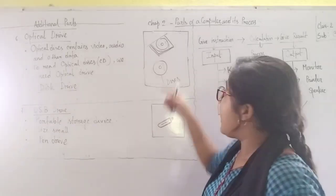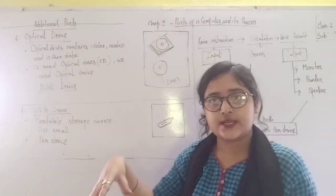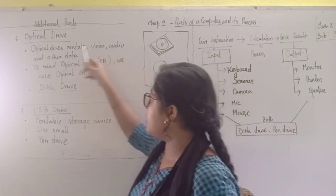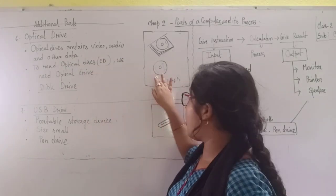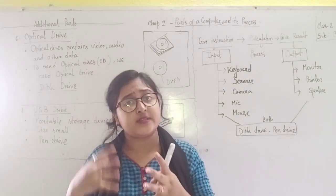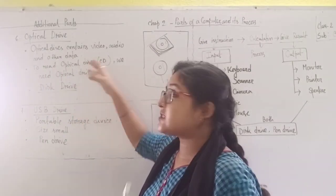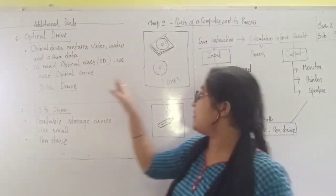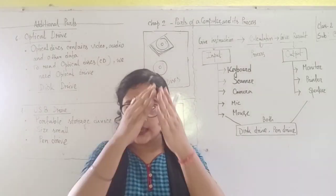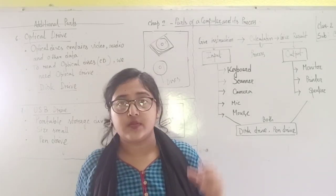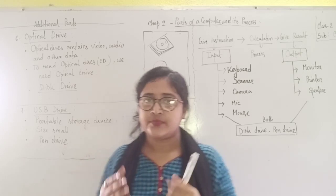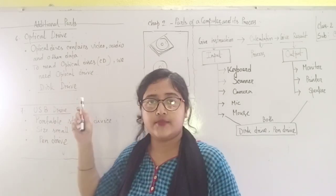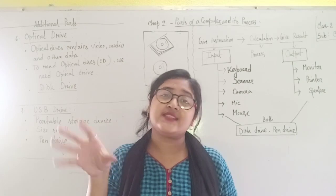This CD is what we call this, and this machine where we put the CD is the optical drive. Optical disk contains video, audio, and other information and data — movies, videos, games, and information. So to read an optical disk or CD, we need an optical drive, which is this machine — inside a CPU, or in a laptop there is also one space for the optical drive. Optical drive is also known as disk drive, because it runs the disk.